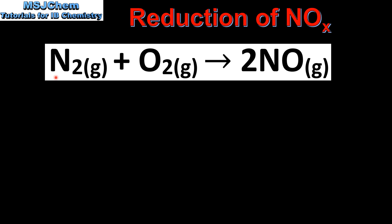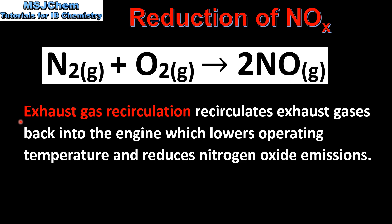At high temperatures in internal combustion engines, nitrogen reacts with oxygen to form nitrogen monoxide. One method of reducing nitrogen oxide emissions is exhaust gas recirculation, which recirculates exhaust gases back into the engine, lowering the operating temperature and reducing nitrogen oxide emissions.